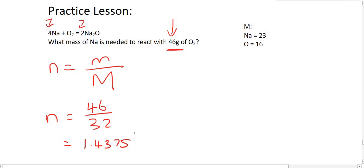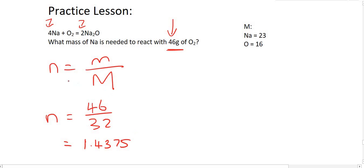If there are only three or four decimal places on your calculator, just write all of them down until we get to the final answer. But if there are a lot of numbers, you can round off to two decimal places. For now, we'll just keep it as 1.4375.